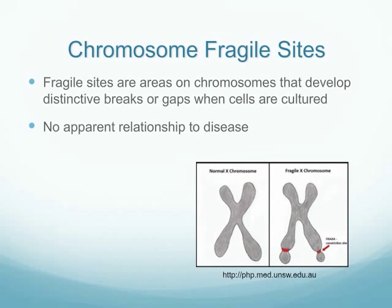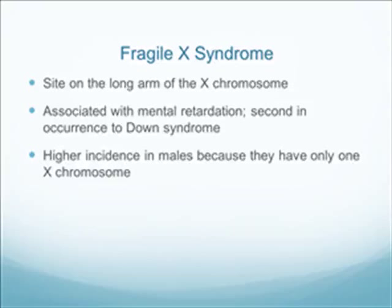Fragile sites are areas of the chromosome that appear fragile, showing distinctive breaks or gaps. These areas might break off and cause problems, although no clear relationship between fragile sites and disease has been found. Fragile X syndrome involves a fragile site on the long arm of the X chromosome and is associated with mental retardation. It usually occurs in men because they only have one X chromosome.